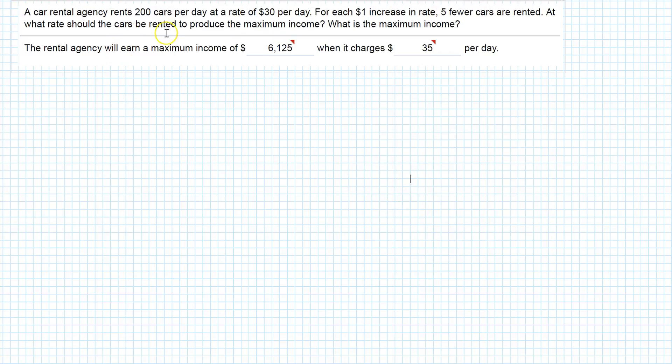They're asking us to find maximum income, so that tells me I need an income function. I'll call it I of X. This problem is about a car rental agency renting a certain number of cars at a certain rate per day. As the rate changes, the number of cars change. If we want to figure out their income, I need to know the number of cars and the rate per car.